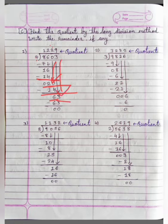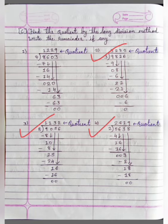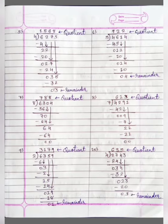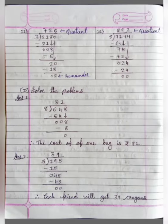Now we have 63. 7 nines are 63. So our quotient is 1,229 and remainder is 0. In the same way, numbers 2 through 11 you can practice yourself.